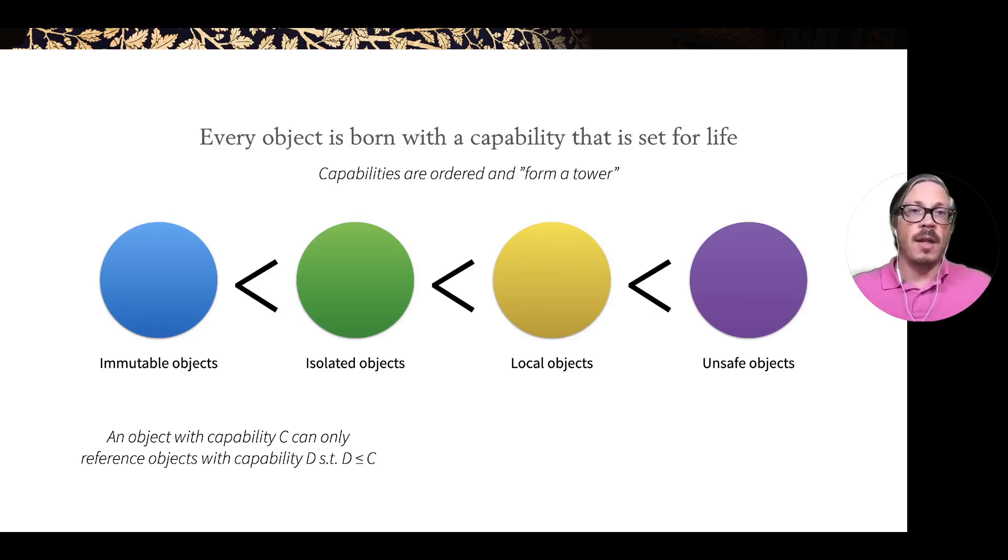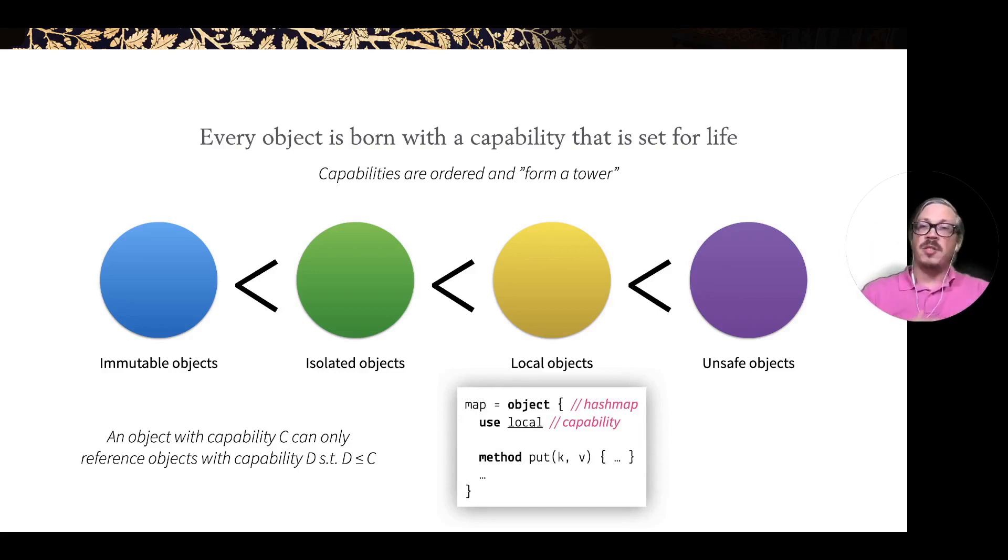In DALA, every object is born with the capability that's set for life. If you want to construct an object, you can just say here is my object and I want to use this capability. This is just borrowing or piggybacking on some existing grace syntax.